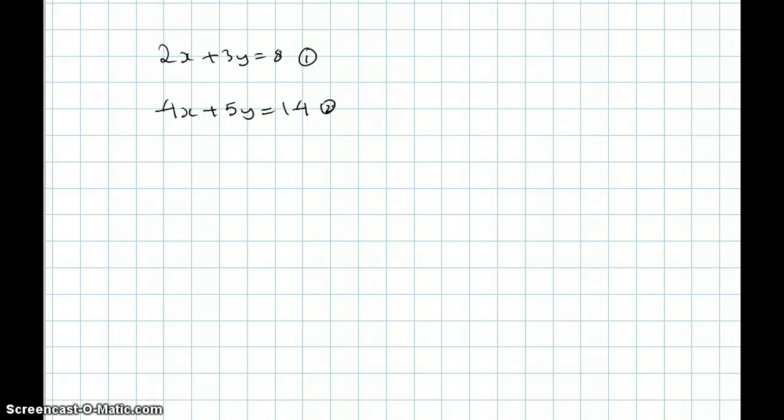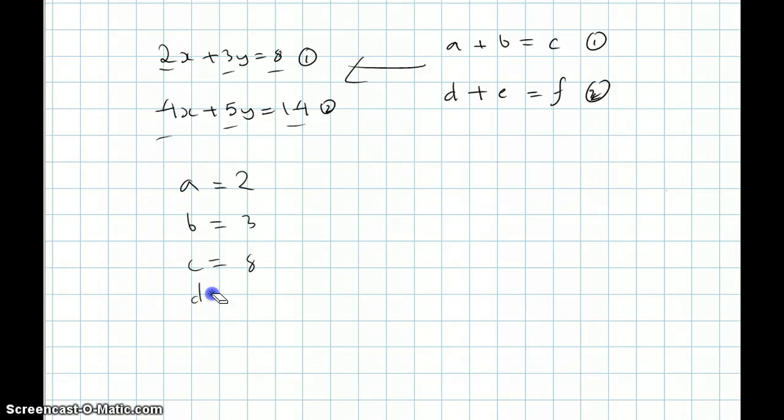So let me just break down the simultaneous equation referring to its coefficients which is 2, 3, 8, 4, 5, 14, something like that. So a plus b equals c, d plus e equals f. And relating it back to this equation, in this case, a equals 2, b equals 3, c equals 8, d equals 4, e equals 5, and f equals 14.